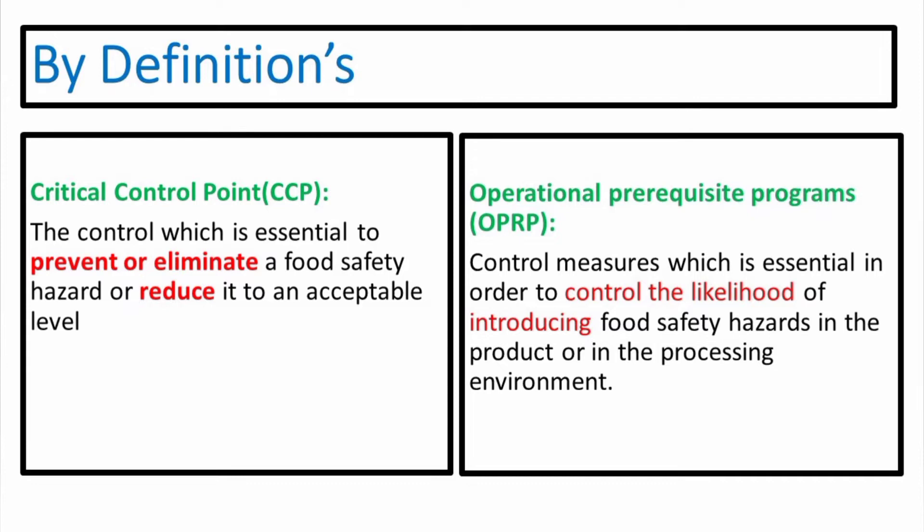From the definitions, we conclude that CCP is the control measure that prevents, eliminates, or reduces the food safety hazard to an acceptable level, while OPRP is used to control the likelihood of introducing food safety hazards in the product or in the processing environment.